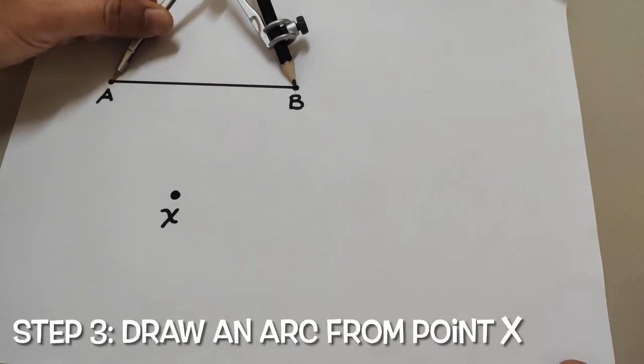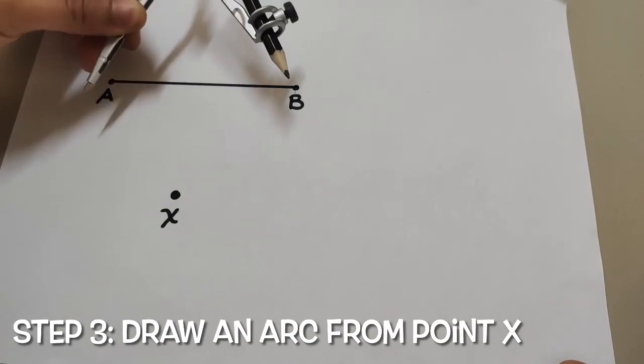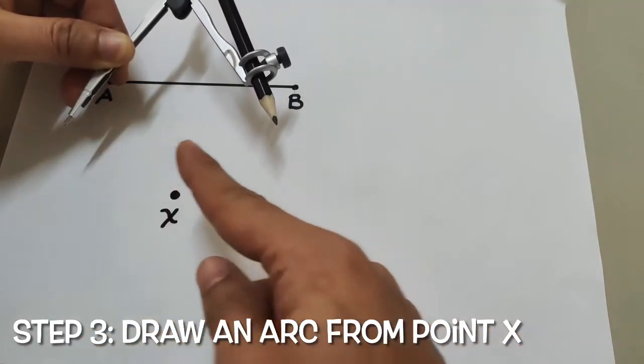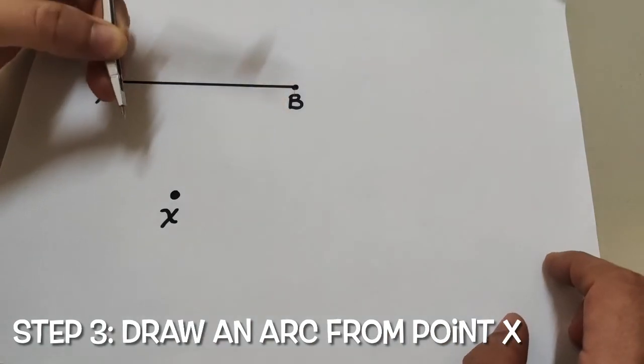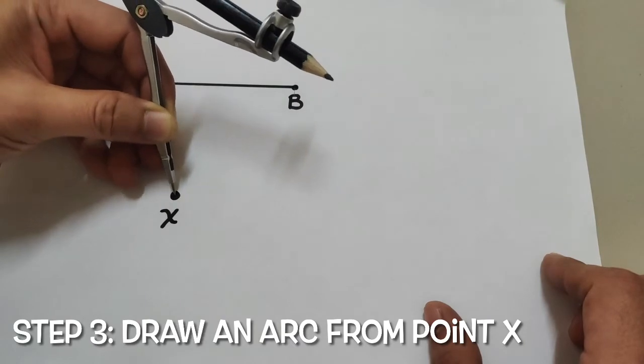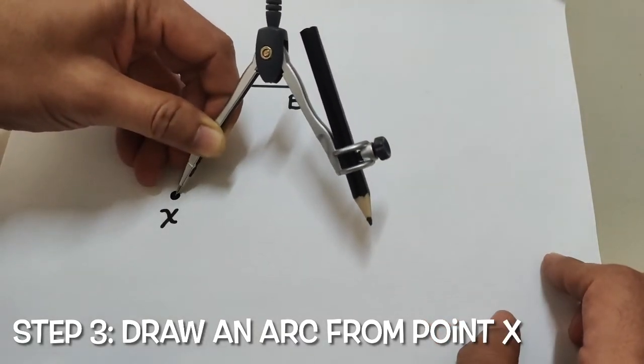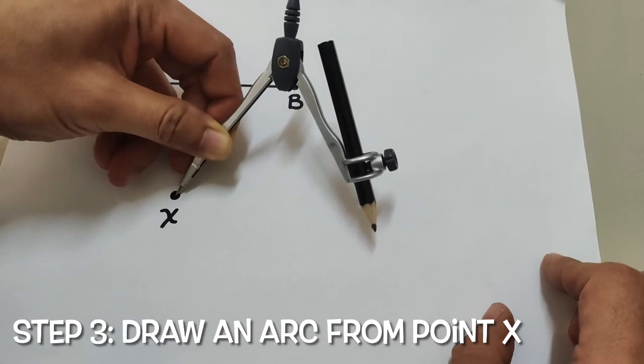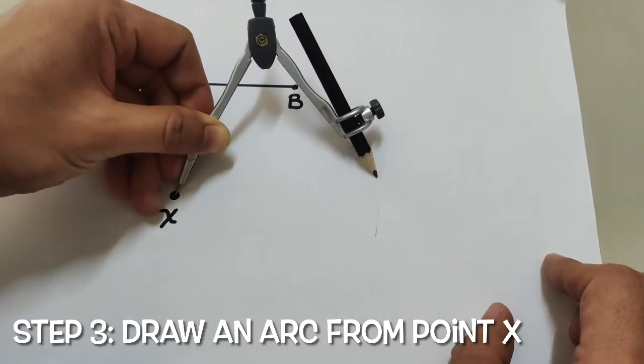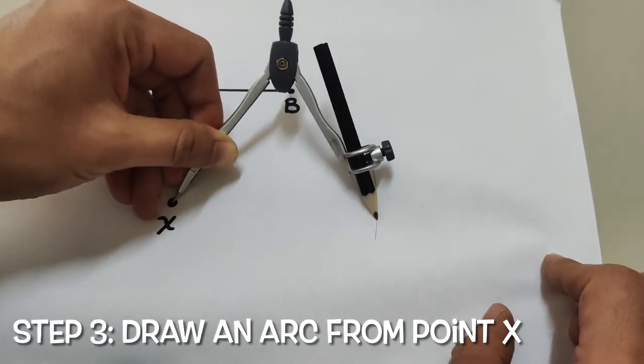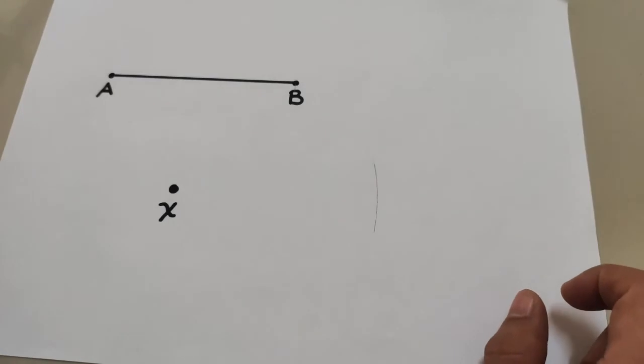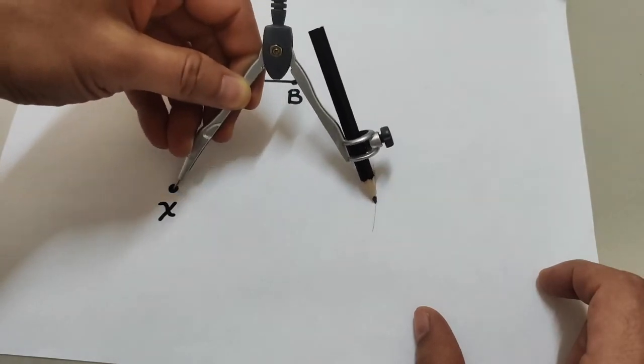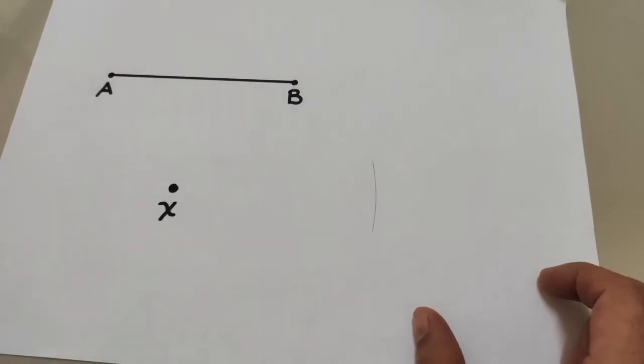To recreate the same length, we will now move the compass without changing the measure or the distance of the lead and the pencil. We will place the pointer on point X, which we drew earlier, and then draw a small arc. As you have noticed, I place the pointer on the point and then just move the pencil around, leaving a mark of the arc.